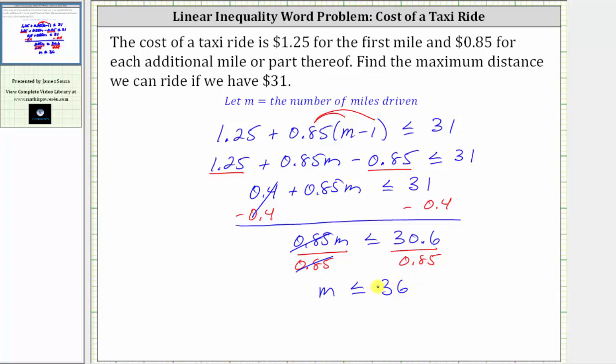So now we know m, the number of miles driven, must be less than or equal to 36. And because we're asked to find the maximum distance we can ride if we have $31, we now know the maximum distance is 36 miles. I hope you found this helpful.